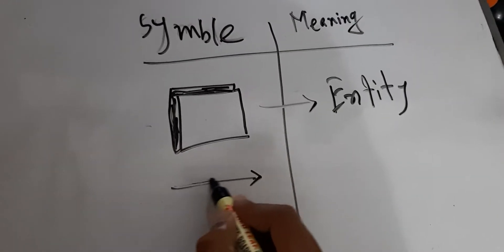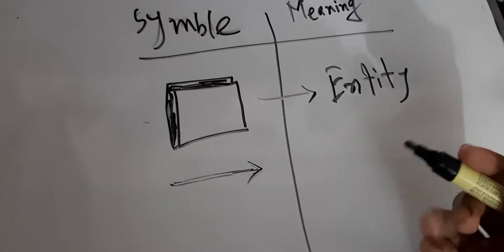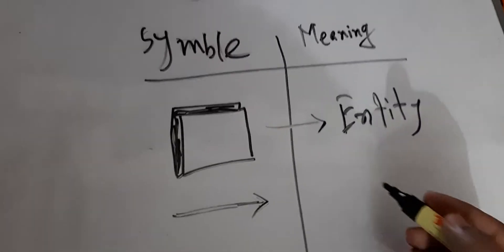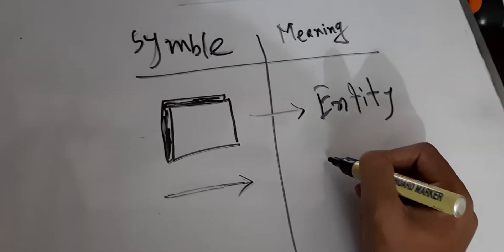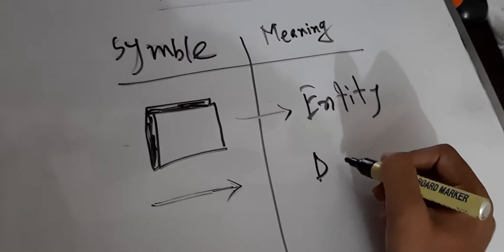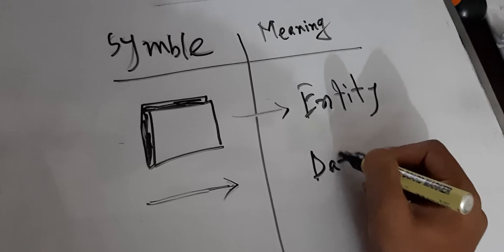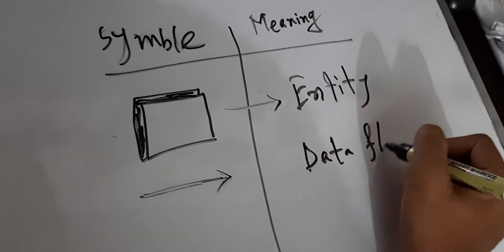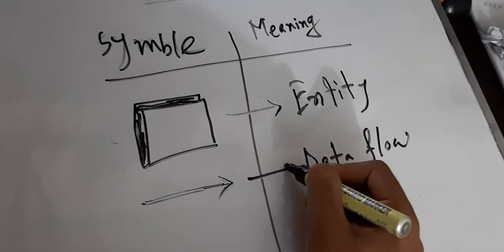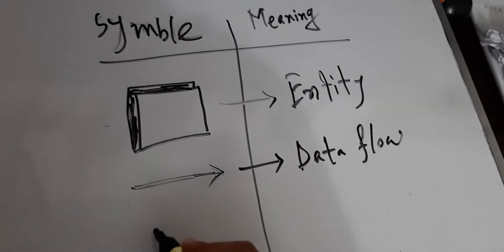Then, this symbol — this symbol's meaning is Data Flow. It is used for showing data flow.